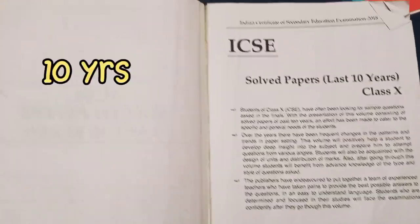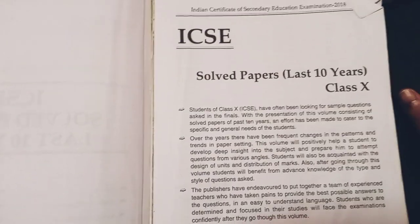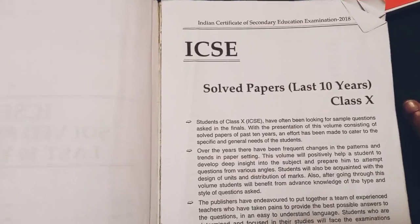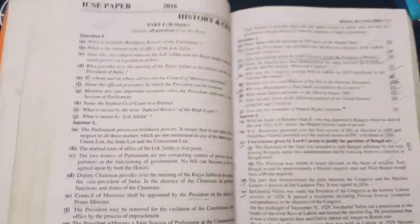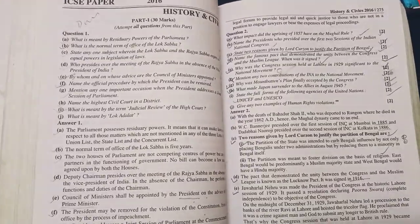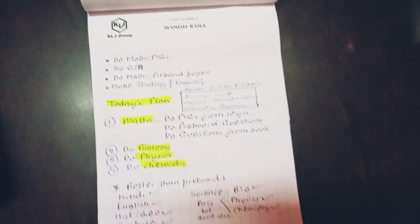You can start with 10 years previous papers. 40 to 50 percent of your question paper will consist of 10 years questions. Make sure that you know the syllabus and study accordingly. Please do not study topics that are not in your syllabus at present. You can also keep a planner with yourself.